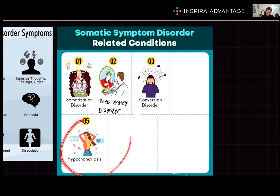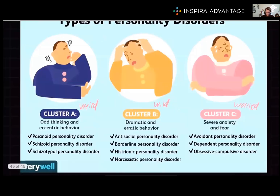Finally, you have to know about hypochondriasis. This is the persistent belief in having a serious illness despite there being no symptoms. So this would be somebody who thinks they have pancreatic cancer, although there are no symptoms pointing to pancreatic cancer.